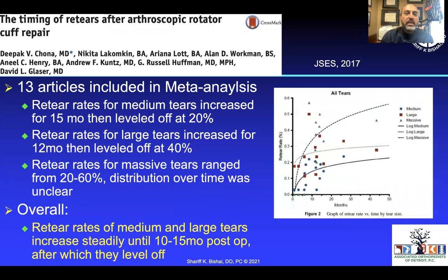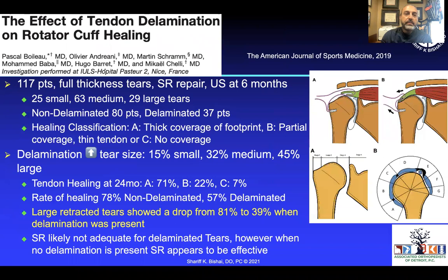On timing: a meta-analysis of 13 articles looking at re-tear rates found that medium-sized tears level off at roughly 20% re-tear rate around 15 months, larger tears around 12 months, and massive tears between 20% to 60%. Getting to them faster reduces re-tear risk — likely because of fatty infiltration accumulation. Re-tear rates for medium and large tears increase steadily until 10 to 15 months then level off. Tendon delamination is also a bad prognostic marker — in one study, healing rates dropped from 81% to 39% when delamination was present, regardless of tear size.